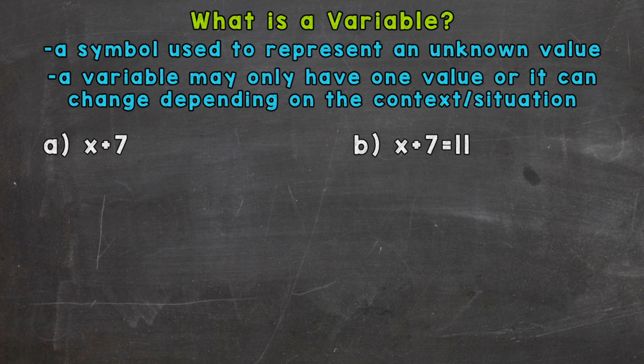Let's jump into example A here, where we have the expression x plus 7. Now, in this example, the variable's value can change. It's not defined or set to be one thing. Maybe we have x equals 3. If x equals 3, then we would have 3 plus 7 equals 10. Maybe we have x is equal to 11. In that case, we would have 11 plus 7, and we would end up with a value of 18. In this situation, the variable's value is not defined.